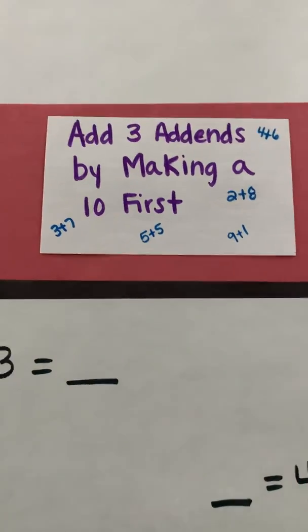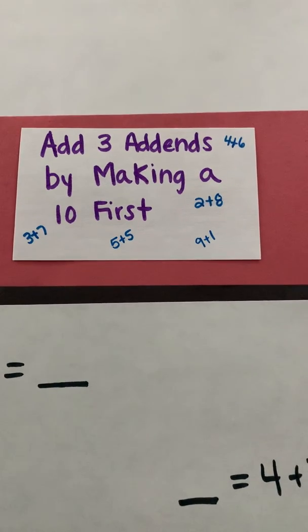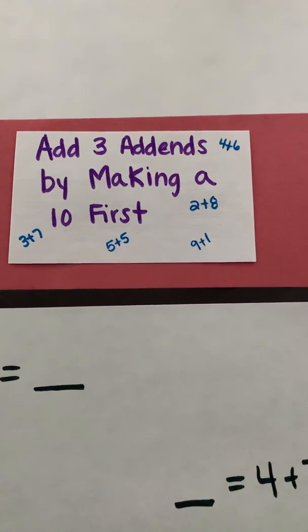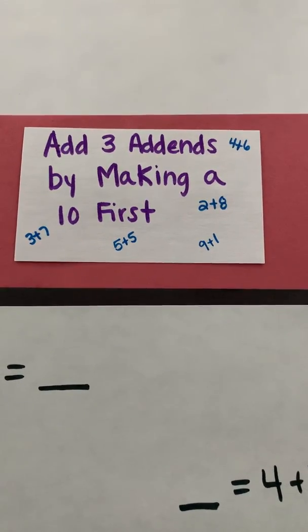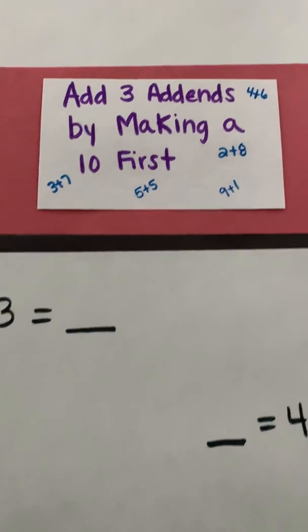But what we're now going to do is we're going to look at adding three numbers together, three addends, and we're going to try to look to see what numbers can make 10 first. All right so let's get started. I'm going to go through two examples with you.